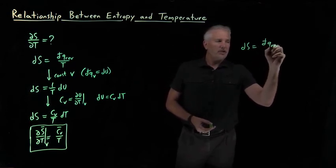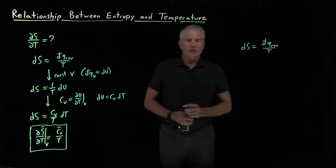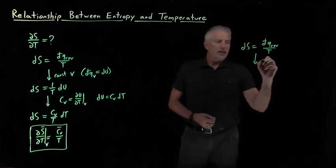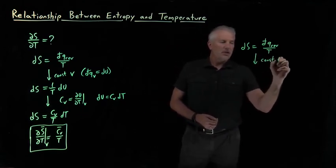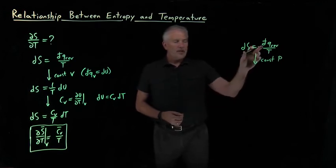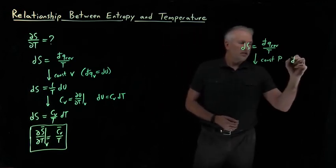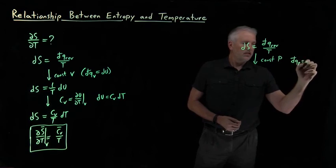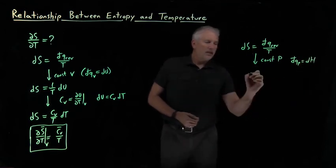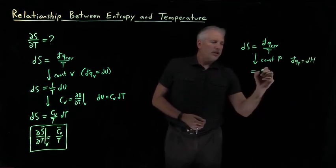So just to illustrate that, it's still true, the Clausius theorem is still true, ds is dq reversible over t. At constant pressure, dq is equal to dh. So then entropy would be dh over t.